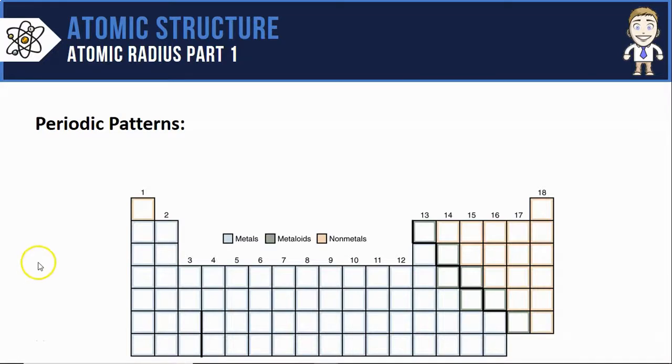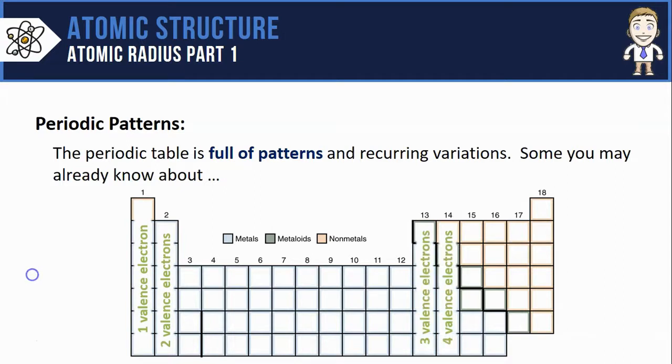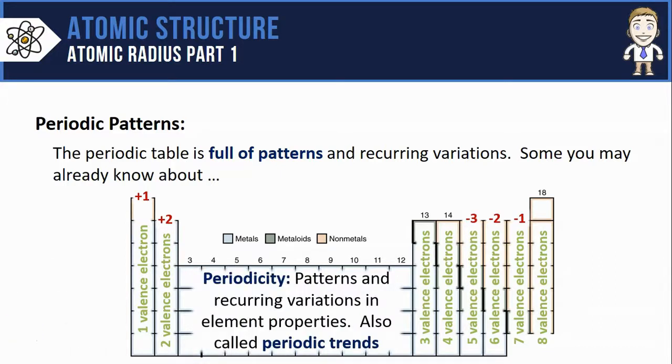You may or may not already know that the periodic table is full of patterns and recurring variations, like that in valence electrons based on column shown in green, or in charge shown in red. Whenever there's a pattern or recurring variation in certain element properties we call that periodicity, and sometimes it's also called periodic trends, which is actually the term that I'll use more often in these videos.